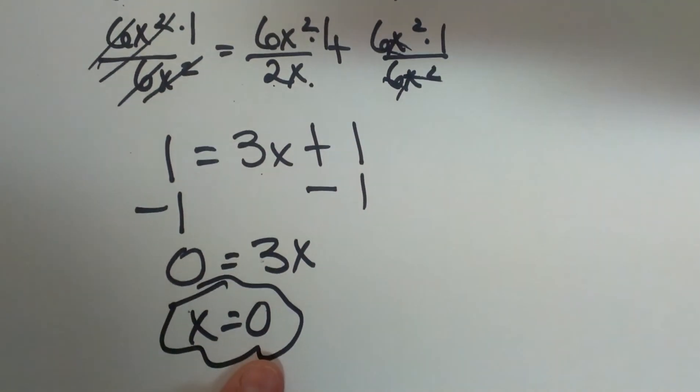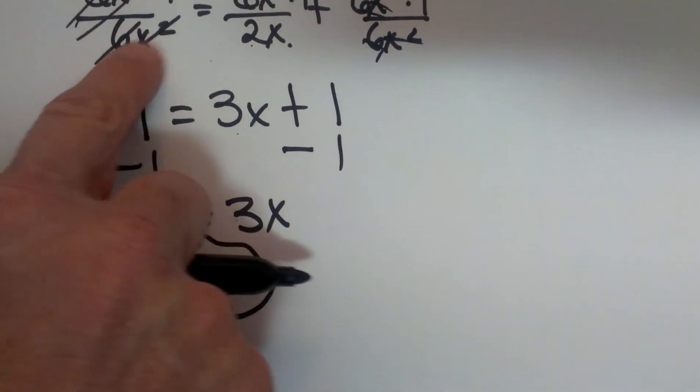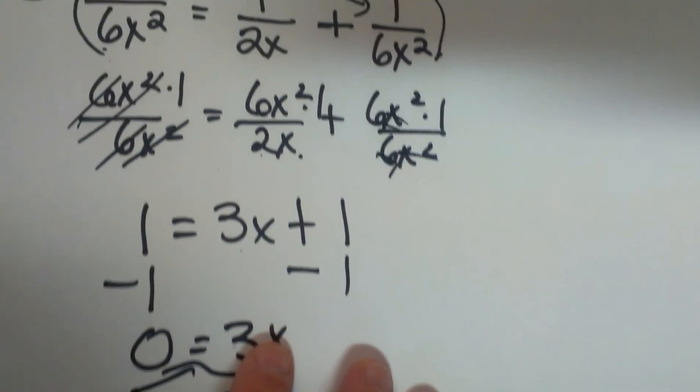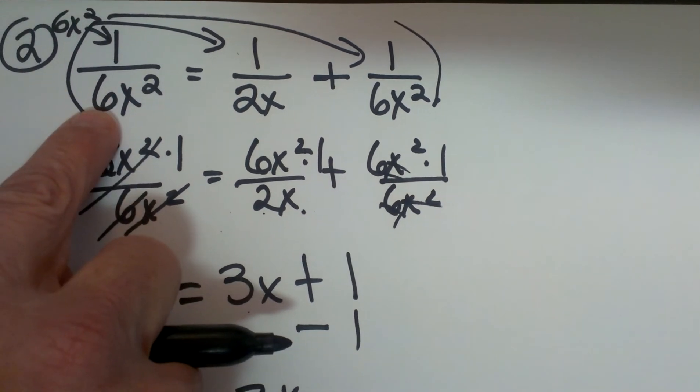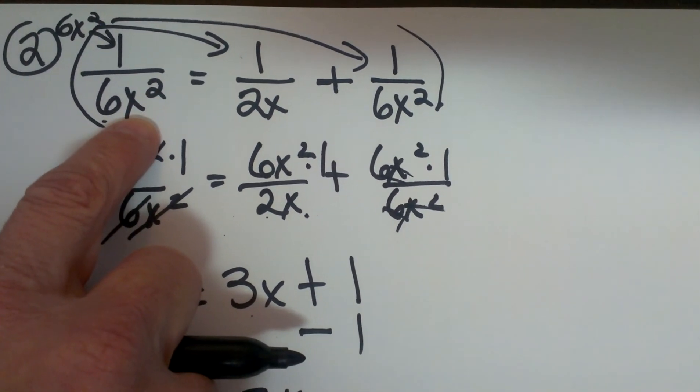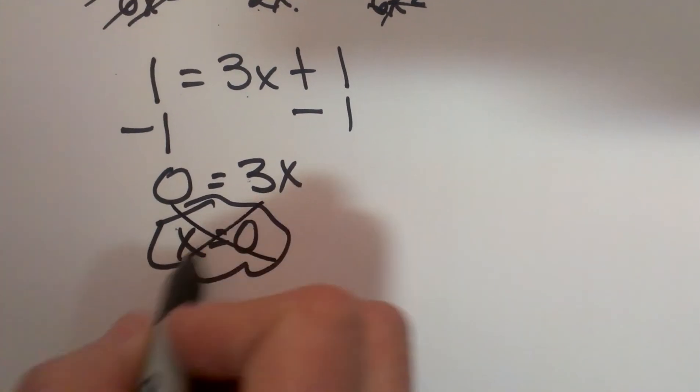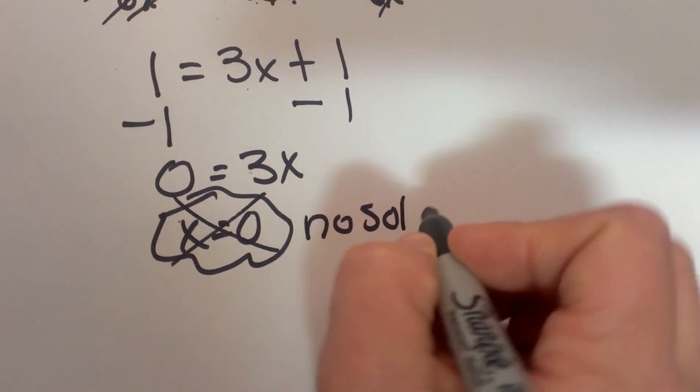Ok now this one has a special case. Because I have 0 I also need to check and make sure it doesn't give me 0 in the denominator of the original equation. If I plug in a 0 here 6 times 0 squared I get 0. So we can't have 0 in the denominator so I actually have to eliminate that answer and this one has no solution.